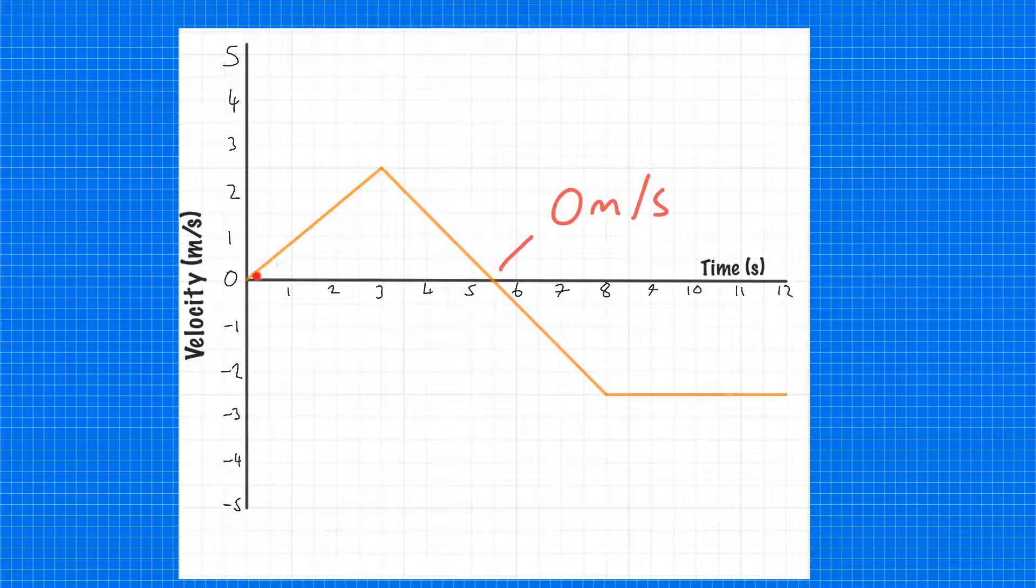It could be a car accelerating away, slowing down, coming to a stop, then reversing, accelerating, and then reversing at a constant velocity.